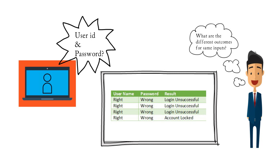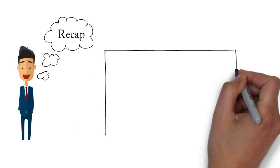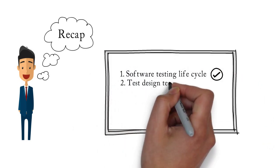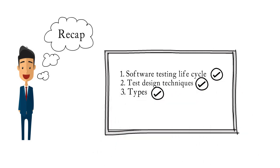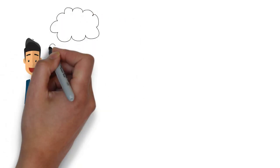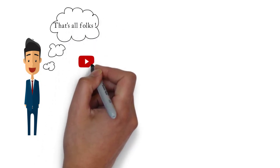These are the different types of test design techniques used to derive test conditions for testing software applications. To recap: we discussed the software testing lifecycle, then understood what a test design technique is, then discussed the different types — equivalence partitioning, boundary value analysis, decision table, and state transition — and we saw all of these with examples.